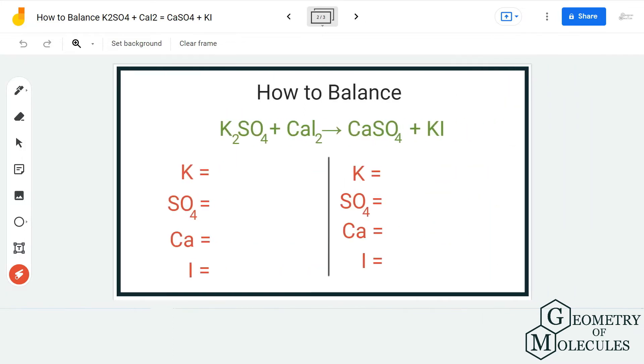To balance this equation, I'm going to count the number of atoms on both reactant and product sides. Here we have two atoms of potassium, we have one sulfate molecule, and then I have one calcium atom and two iodine atoms.